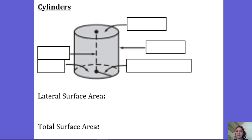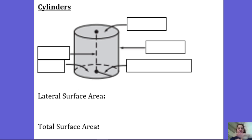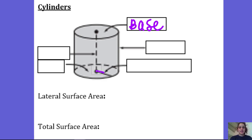A cylinder is similar to a prism in that it has two bases that are congruent and parallel, except the bases of a cylinder are circles. So this is a base of our cylinder, and then there's one down there. This distance from the center of the circle to the edge of the circle is the radius of the circle.